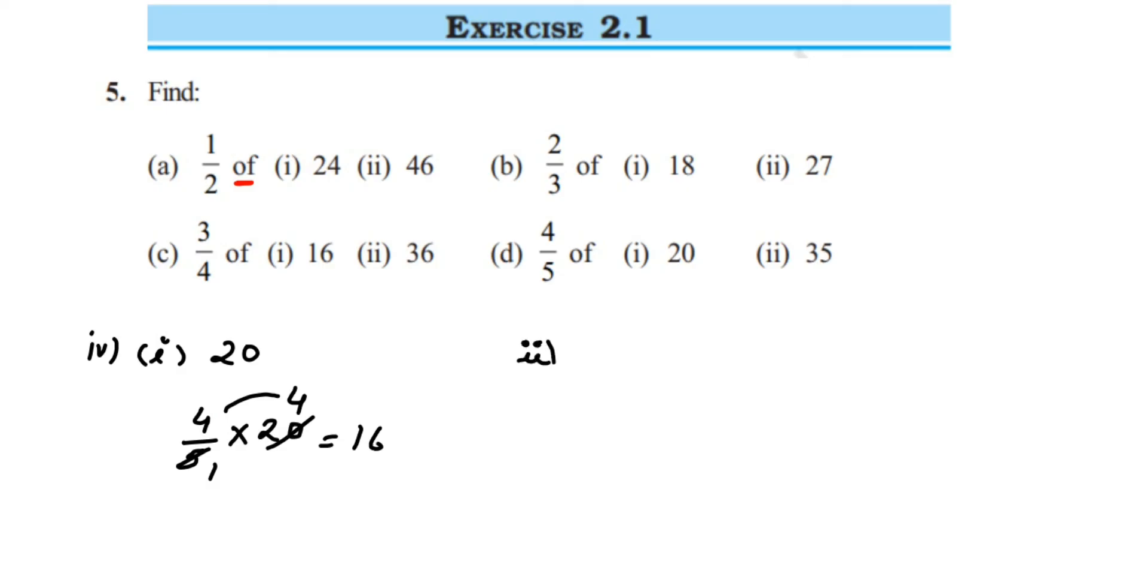And the last one is 35. So 4/5 of—'of' means multiplication—35. So five and 35 you can cancel: five ones are five, five sevens are thirty-five. The number left in the numerator is four and seven. Four sevens are twenty-eight, this equals twenty-eight.